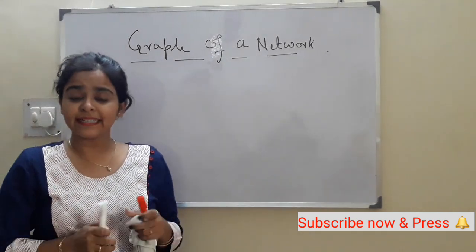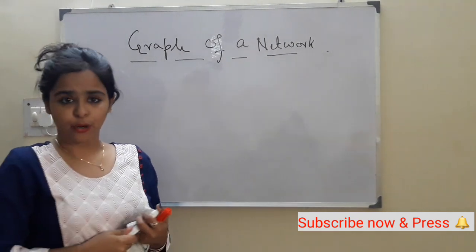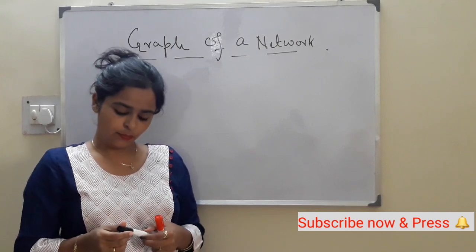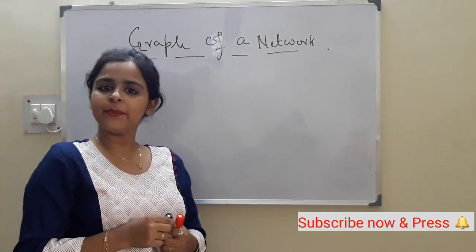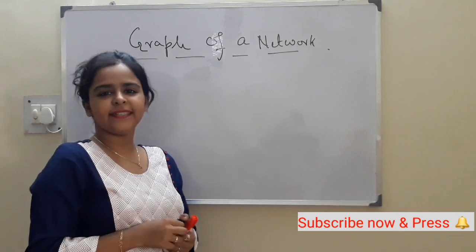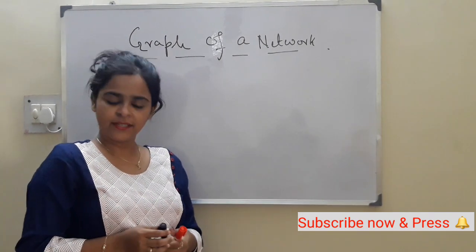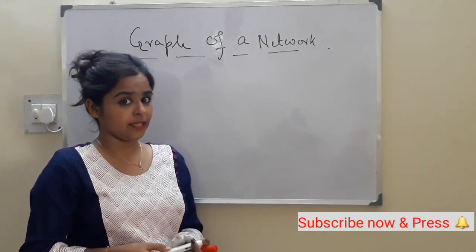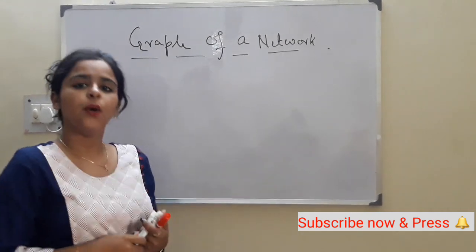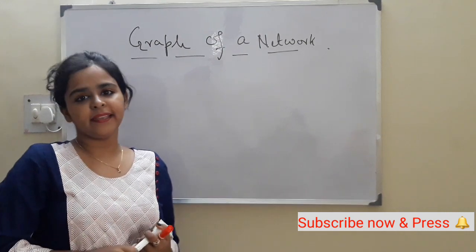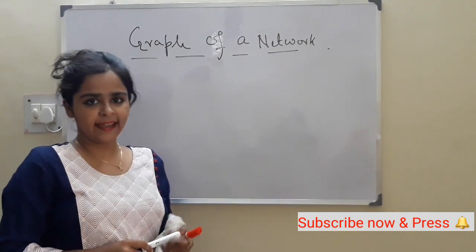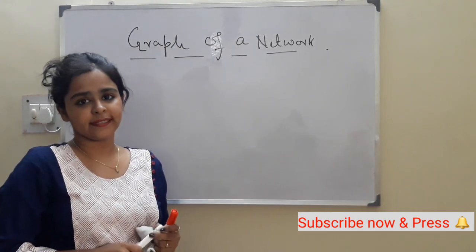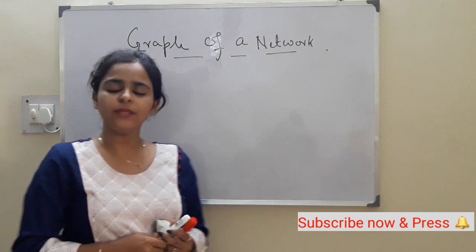What is a graph of a network and how will you draw it? A graph of a network is a geometric figure where all the passive elements of the network are represented by a line segment. All ideal voltage sources are represented by a short circuit, and all ideal current sources are represented by an open circuit, retaining all the nodes the same.